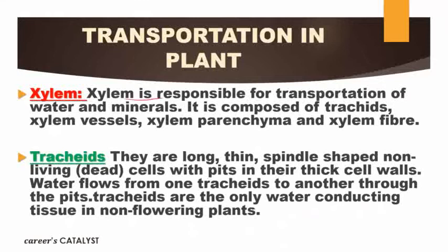First, xylem is responsible for transportation of water and minerals. It is a complex permanent tissue, so it is made up of more than one type of cell. The four types of cells in xylem are: tracheid, xylem vessel, xylem parenchyma, and xylem fiber. These are the four components or elements of xylem tissue.